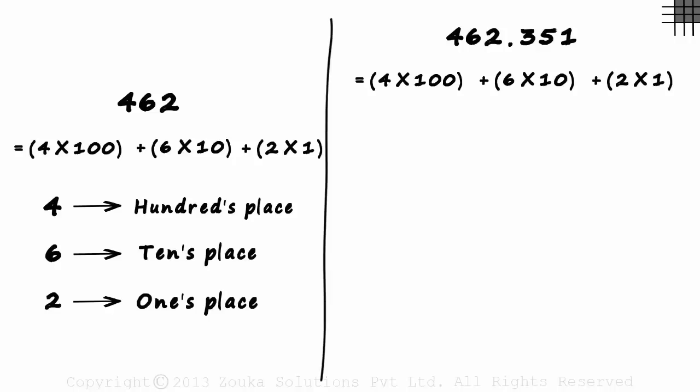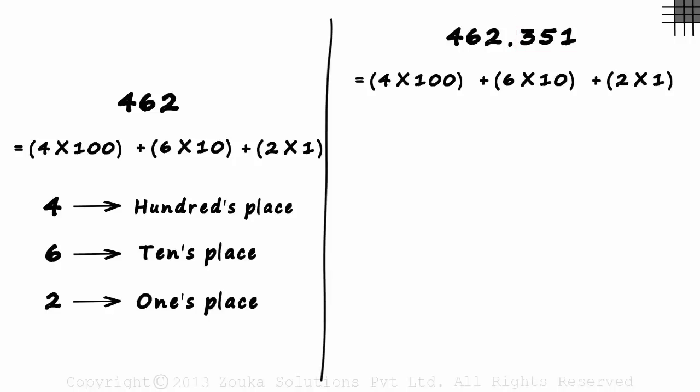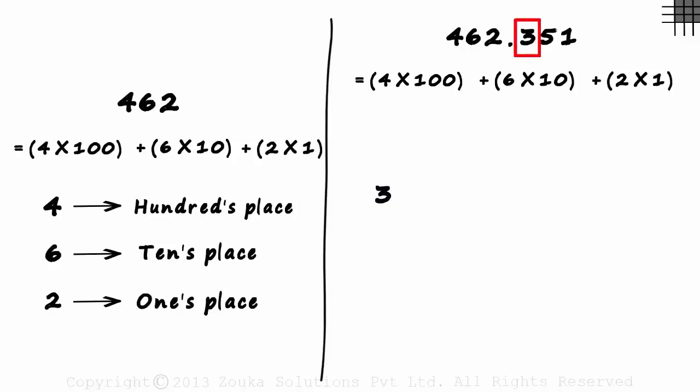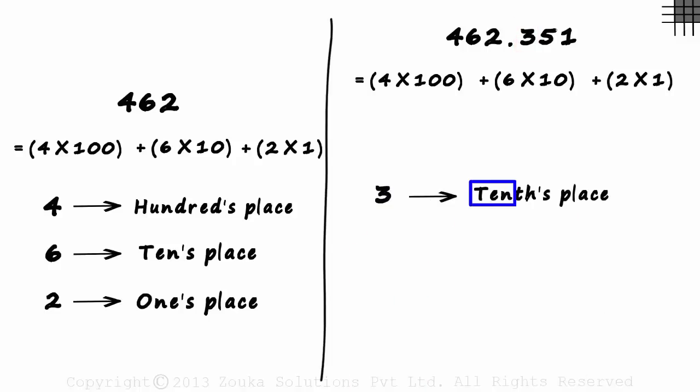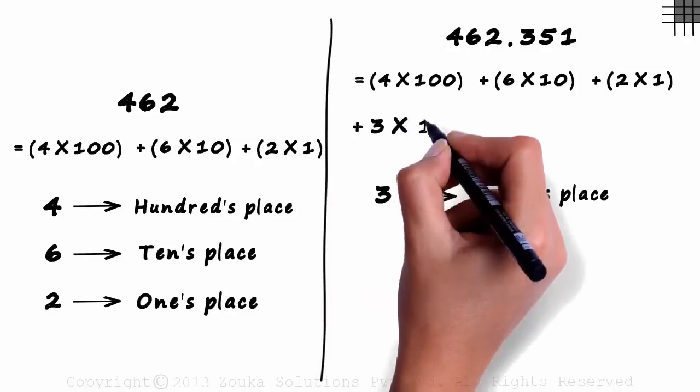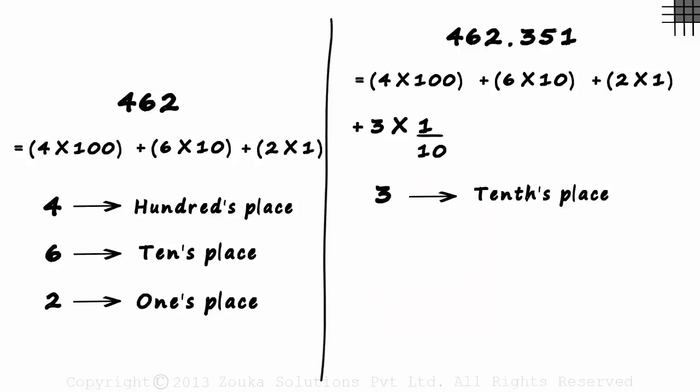But what is the place value of the digits after the decimal point? The first digit after the decimal point, in this case 3, is in the tenths place. Not tens, but tenths place. So its value would be 3 times 1/10, or 3 tenths.